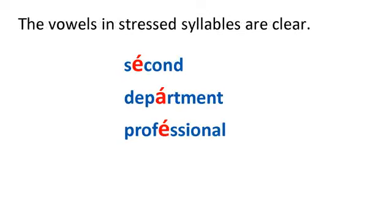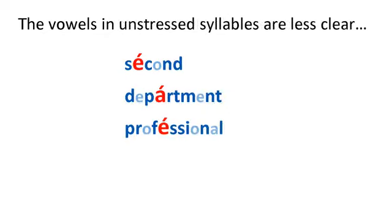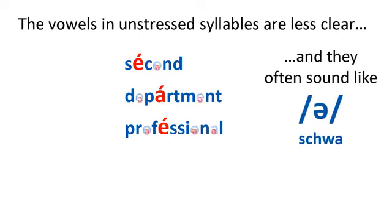The vowel sounds in those stressed syllables are pronounced clearly and distinctly. We might think of them as the true sounds of vowels. But the vowels in unstressed syllables are different. They're softer and less clear, and they often sound like schwa, the vowel sound represented by the symbol schwa. Second, Department, Professional.